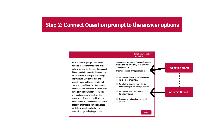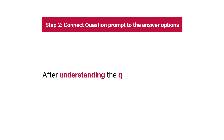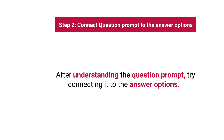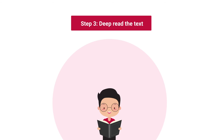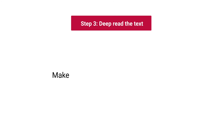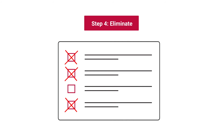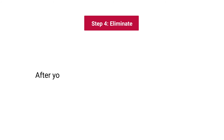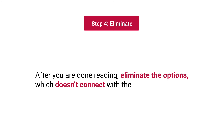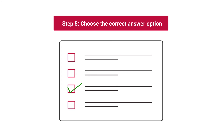After understanding the question prompt, try connecting it to the answer options. Step three: deep read the text. Make sure to re-read the text, but don't consume a lot of time. Step four: eliminate. After you are done reading, eliminate the options which don't connect with the question prompt.